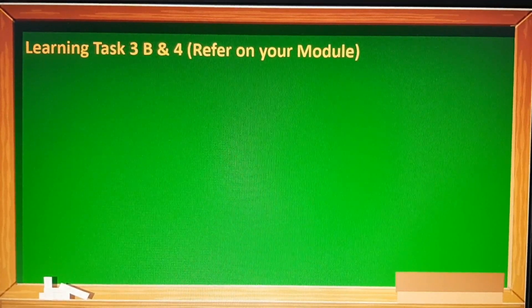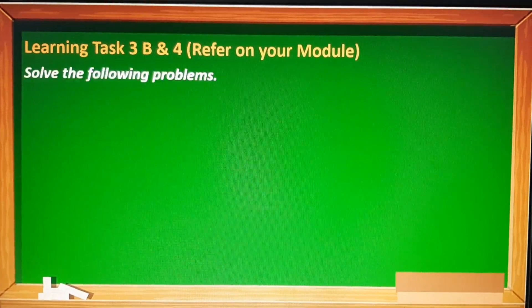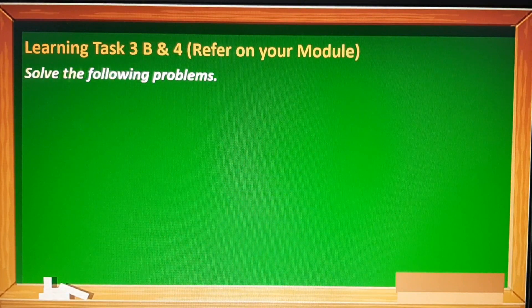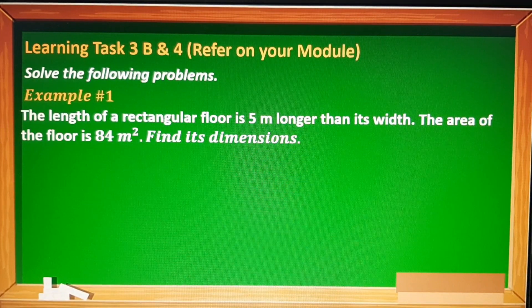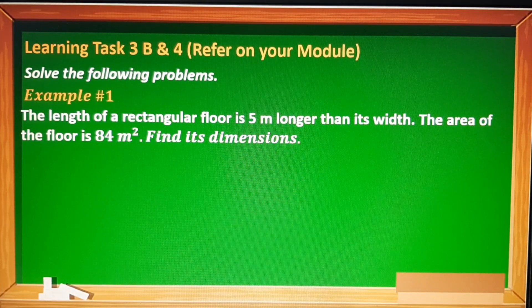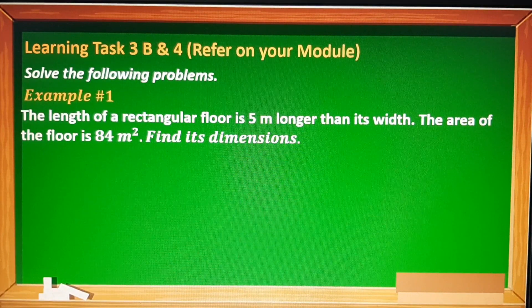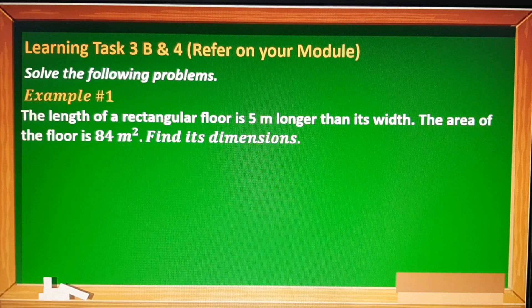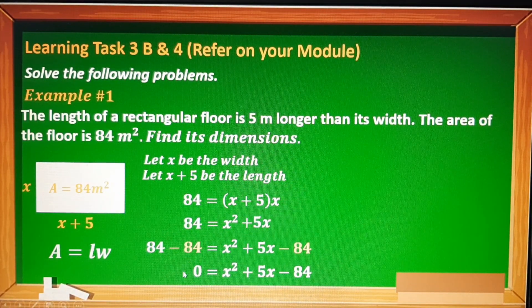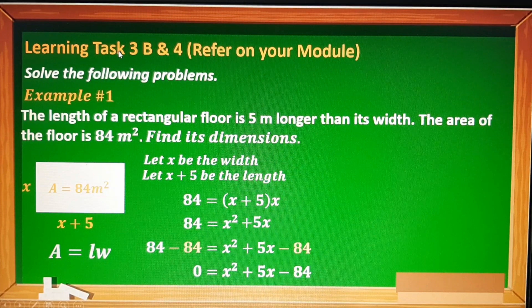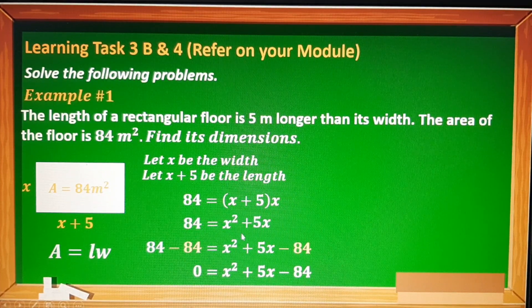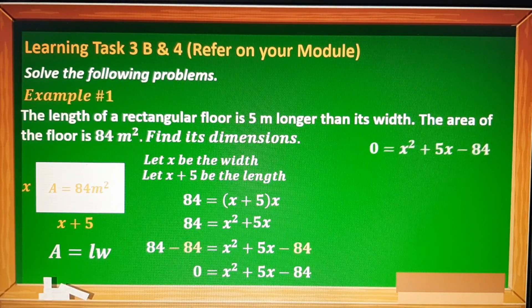Ngayon naman, titingnan ninyo ang learning task 3B and 4 ninyo sa inyong mga module. So gagamitin lang natin yung naunang problems na ginamit natin kanina, itutuloy lang natin siya sa pag-solve. Eto yung problem kanina: The length of a rectangular floor is 5 meters longer than its width. The area of the floor is 84 meters squared. Tinagdagan lang natin siya ng tanong na find its dimension. So eto yung gagamitin nating problem, ikukontinue lang natin. Eto yung kanina ang unang ginawa natin, ito yung quadratic equation.